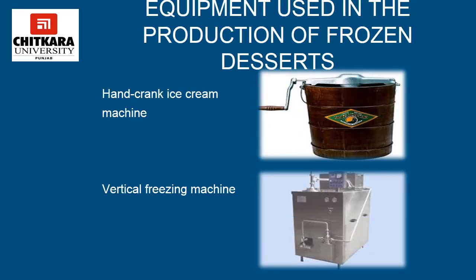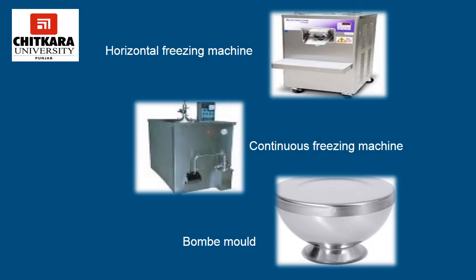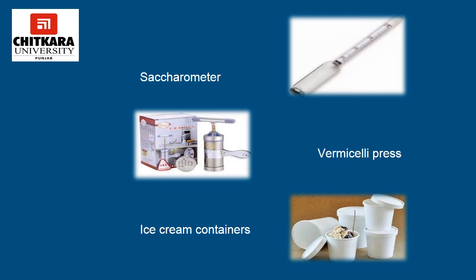Ice cream makers may prepare the mixture by hand cranking or by employing an electric motor. The preparation is often chilled through pre-cooling the machine or by employing a machine that freezes the mixture. An ice cream maker has to simultaneously freeze the mixture while churning it to aerate the mixture and keep the ice crystals small, so most ice creams are ready to consume immediately. Equipment used in the production of frozen desserts includes hand crank ice cream machines, vertical freezing machines, horizontal freezing machines, continuous freezing machines, bomb molds, saccharometers, vermicelli presses, and ice cream containers.